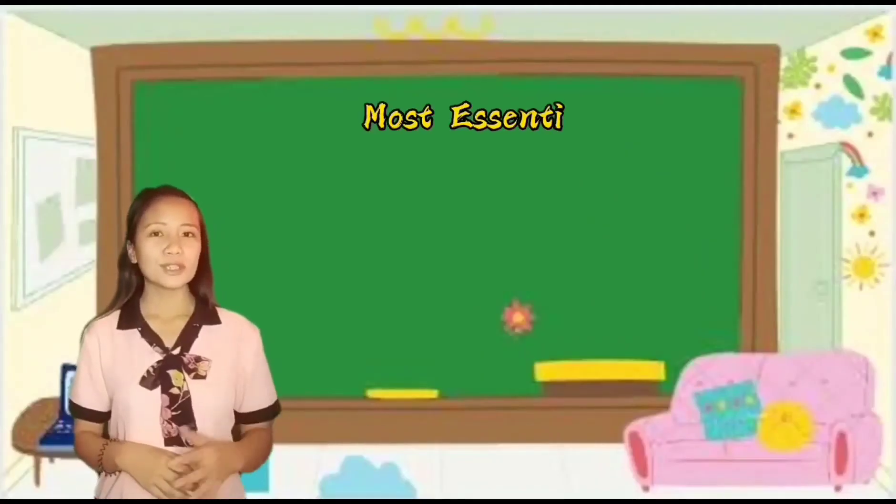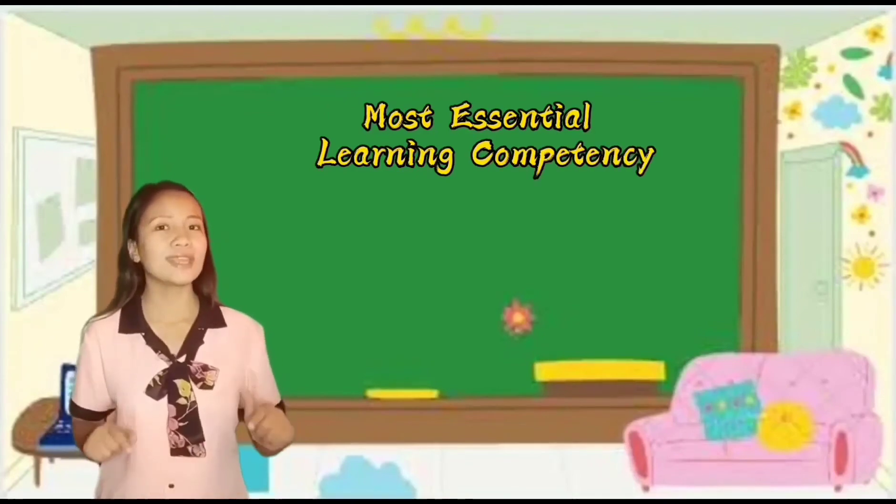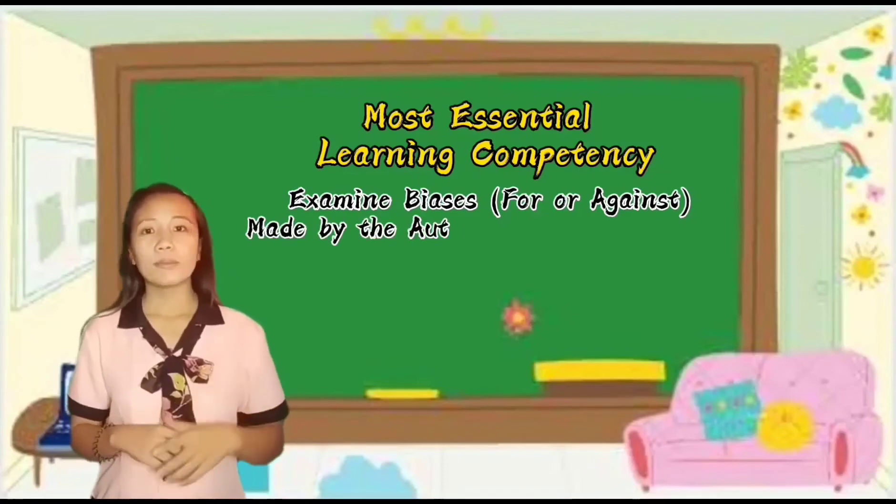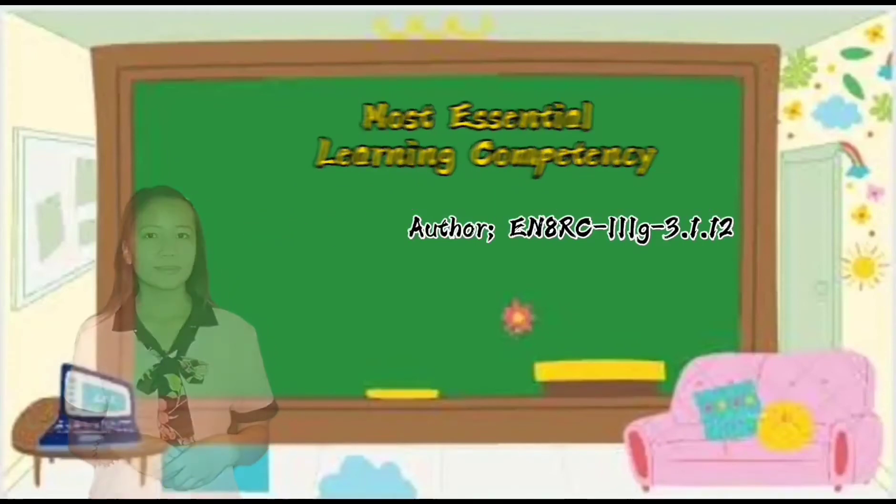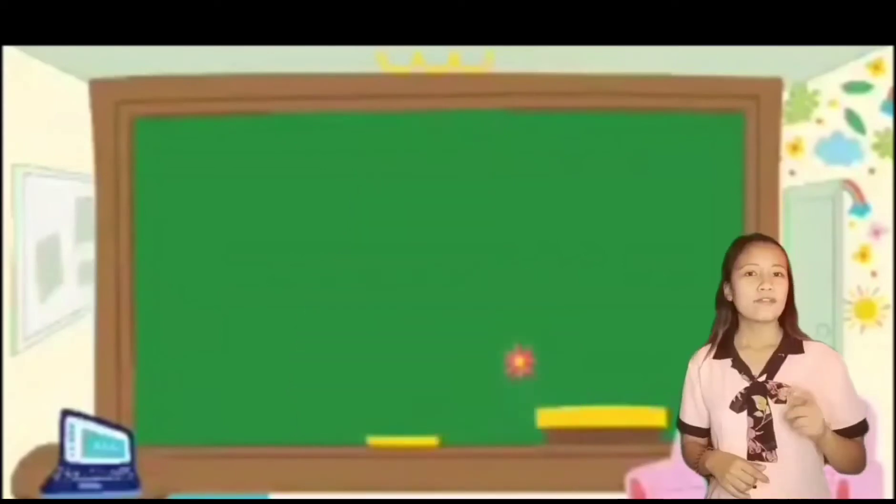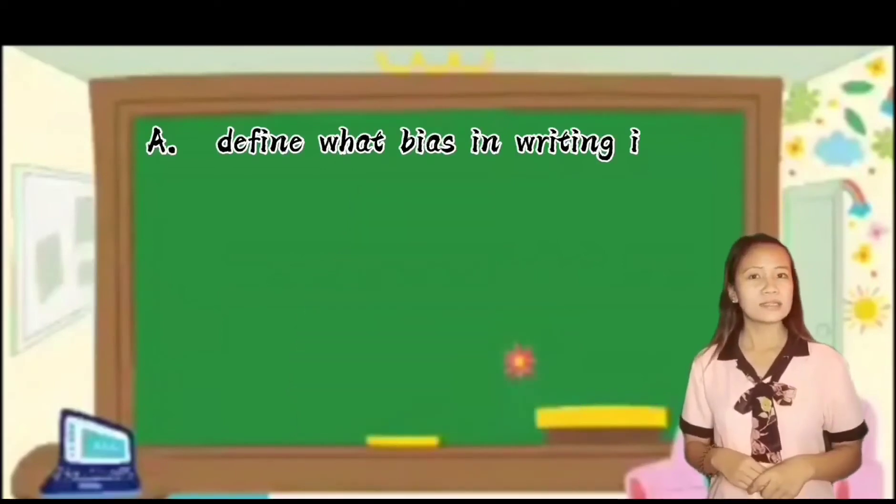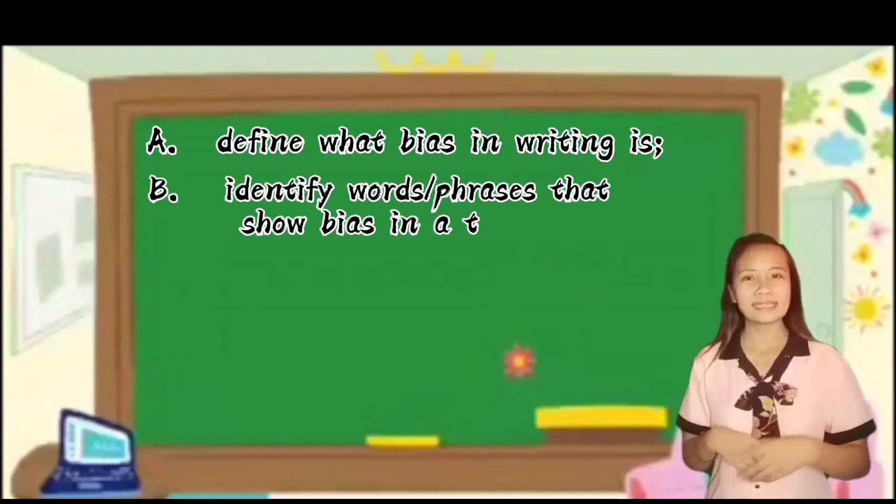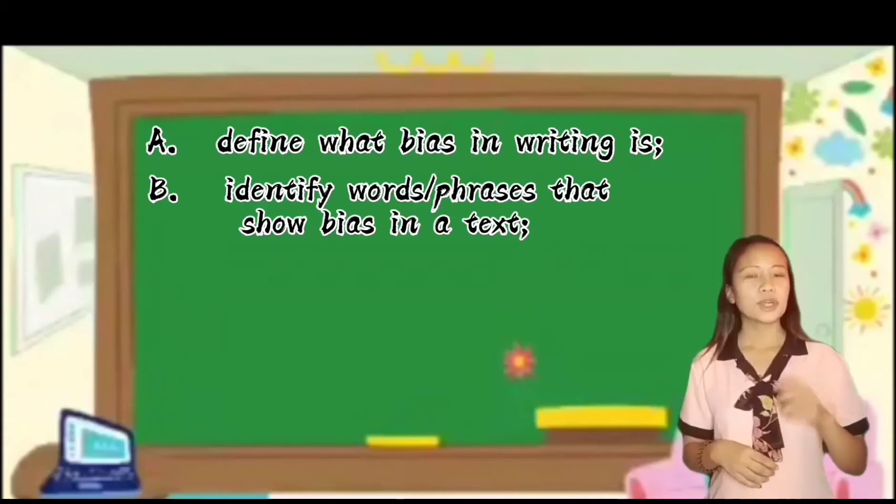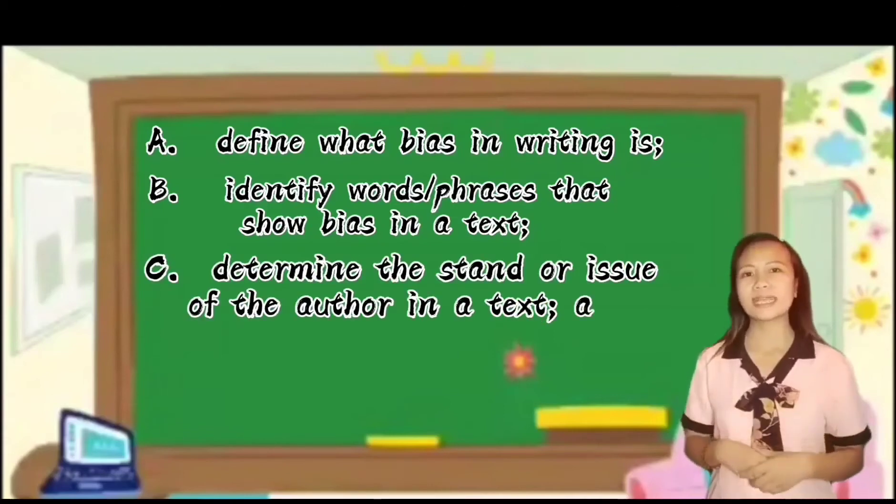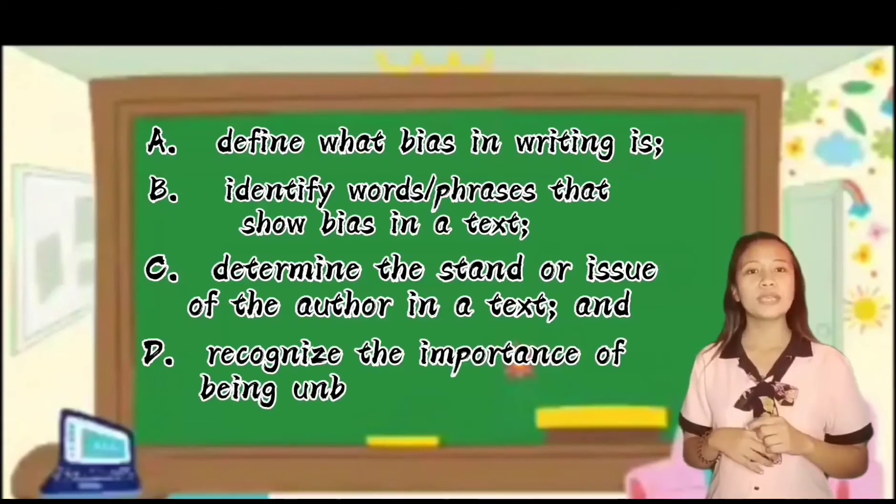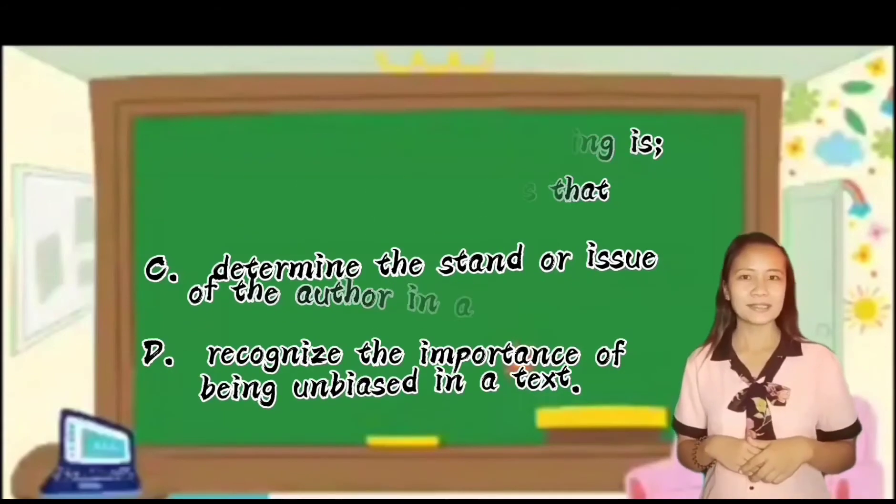The most essential learning competency of this video lesson class is examine biases for or against made by the author. So at the end of this video lesson class, you are expected to define what bias in writing is, identify words and phrases that show bias in a text, determine the stand or issue of the author in a text, and recognize the importance of being unbiased in a text.